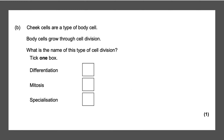Our first exam question states: cheek cells are a type of body cell; body cells grow through cell division. What is the name of this type of cell division? The answer is mitosis, because mitosis replicates cells and produces more cells that have been damaged or need to repair. That gives you your one mark.